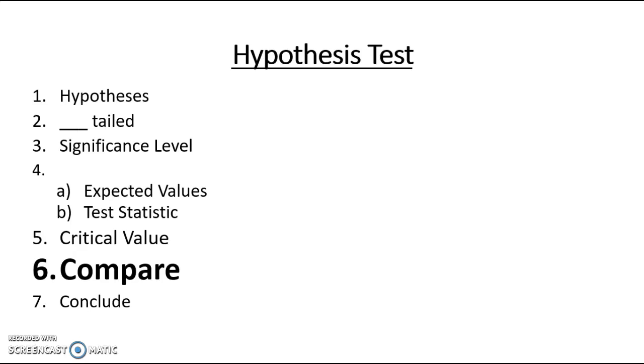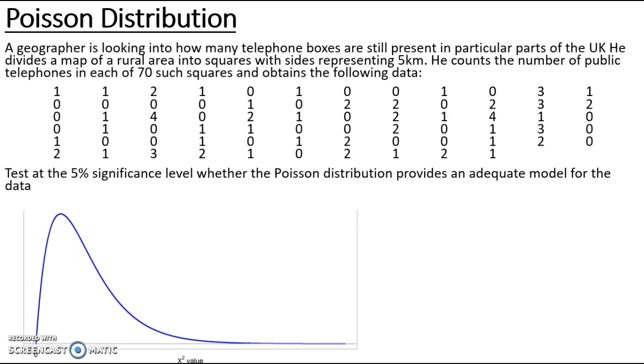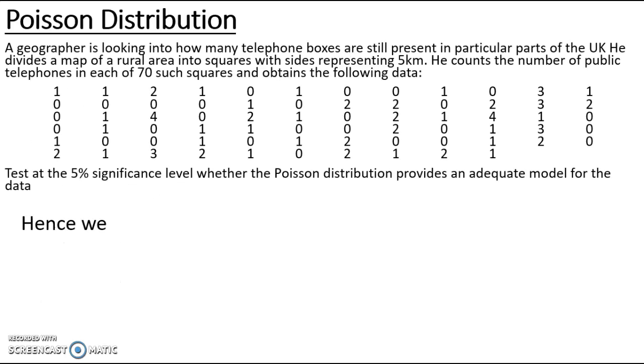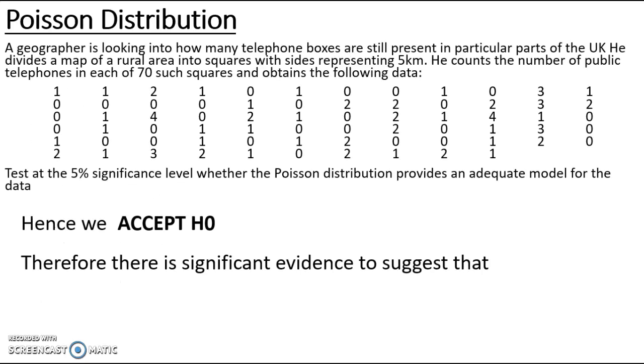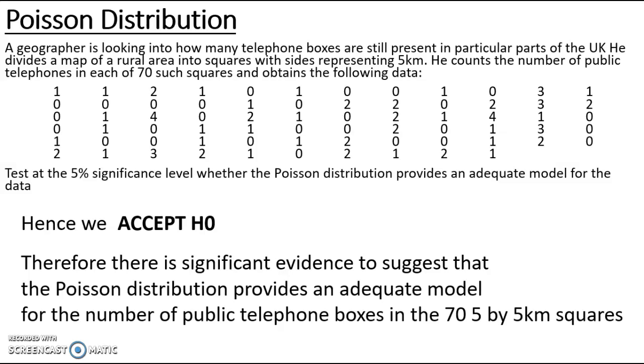The last two points are compare and conclude. Drawing my chi-squared distribution, I put on my critical value which is 5.991. Anything to the left of that in the belly, I'm going to accept that test statistic. I'm going to accept H0, and anything in the tail on the right-hand side is going to be rejected. My test statistic was 0.47075, so we can really easily see that that is going to be an accept conclusion. Hence we accept H0. Therefore, there is significant evidence to suggest that the Poisson distribution provides an adequate model for the number of public telephone boxes in the 75 by 5 kilometers square.